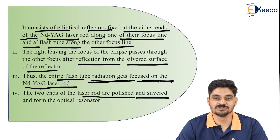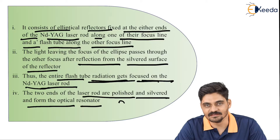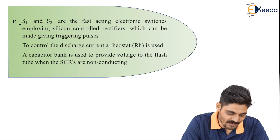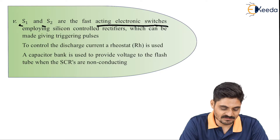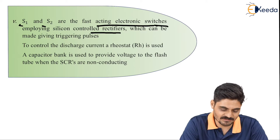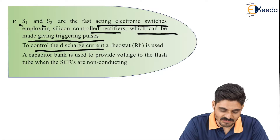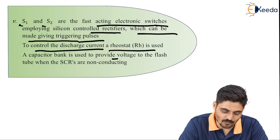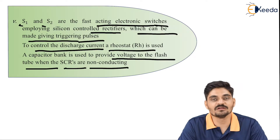The two ends of the laser rod are polished and silvered, forming the optical resonator cavity. S1 and S2 are fast-acting electronic switches employing silicon-controlled rectifiers, which can be triggered using triggering pulses. To control the discharge current, a rheostat is used, and a capacitor bank provides voltage to the flash tube when the SCRs are non-conducting.